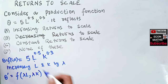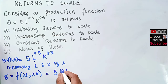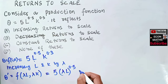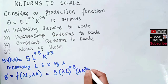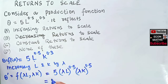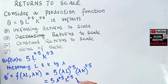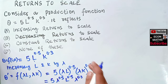Our new production function will be: in place of L we have lambda-L raised to the power 0.5, times in place of K we have lambda-K raised to the power 0.3. Solving this out, we can write it as lambda^0.5 * L^0.5, and symmetrically we have lambda^0.3 * K^0.3.